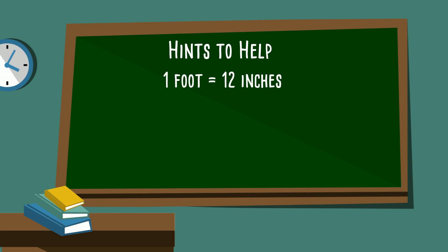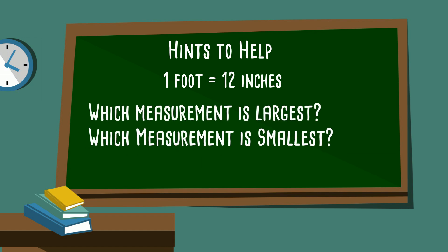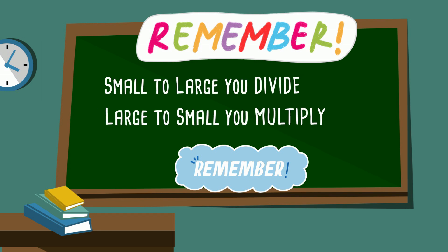For example, the first hint would be 1 foot equals 12 inches. Let's first determine which measurement is largest and which is smallest. The larger number actually equals the smaller unit of measure, and the smaller number equals the larger unit of measure. Another thing to remember is that when you go from small to large, you divide, and when you go from large to small, you multiply.